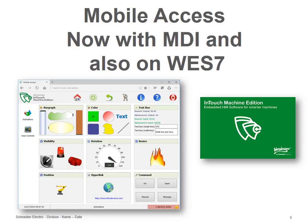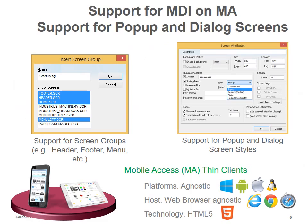With Mobile Access on ITME you can now have multiple screens. What you see here is actually separate screens: one on the top with the header, one on the left with the menu, on the bottom a footer showing the date, time, and the screen that is open, and in the middle the main screen showing all the animations supported on Mobile Access. This was added in this edition of InTouch Machine Edition, which also now runs on Windows Embedded 7.